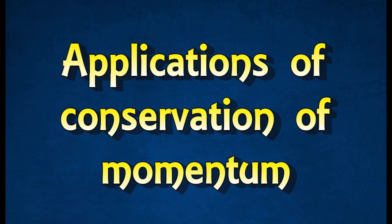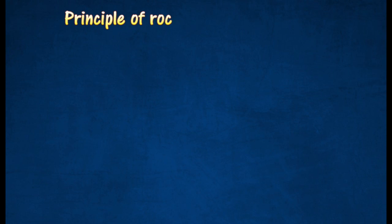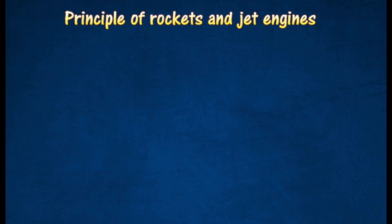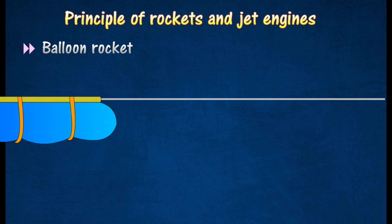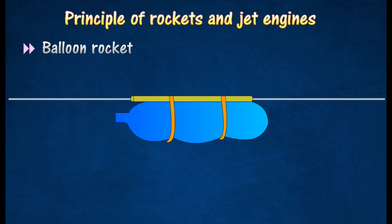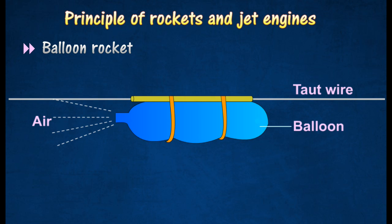There are several real-world applications of conservation of momentum. One example is the working principle of rockets and jet engines. Consider the following balloon rocket. A balloon rocket is a balloon suspended from a taut wire by a hollow tube and string. The air released from the balloon has a momentum to the left. Since momentum is conserved, the balloon will have a momentum of the same magnitude, but in an opposite direction, causing it to move to the right.